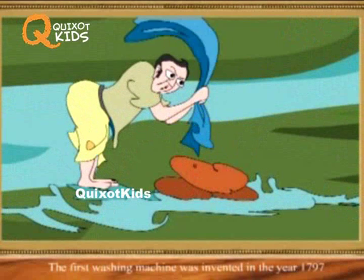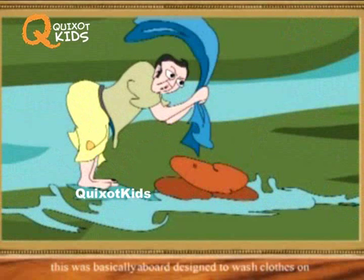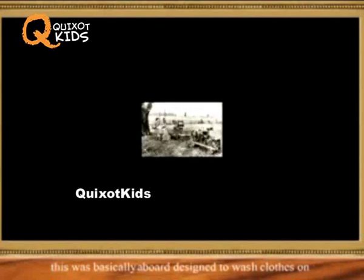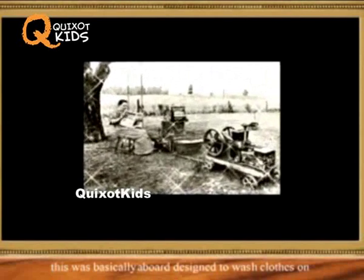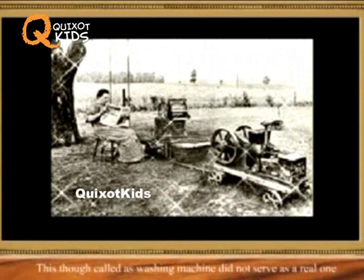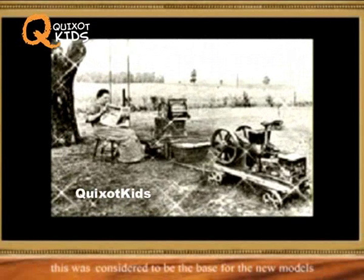The first washing machine was invented in the year 1797. This was basically a board designed to wash clothes on. Though called a washing machine, it did not serve as a real one — it was considered to be the base for new models.